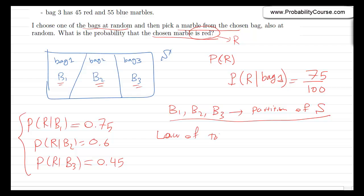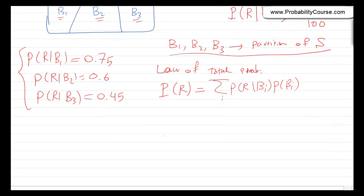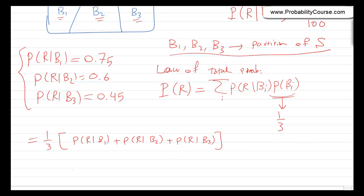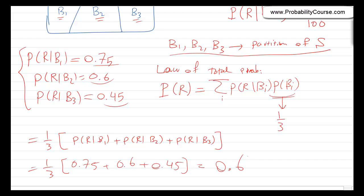By the law of total probability, the probability that I choose a red marble equals the summation over i of probability of R given Bi times probability of Bi. Now, probability of Bi is equal to one-third for each of the bags since I choose one of them uniformly at random. So this becomes 1 over 3 times probability of R given B1, plus probability of R given B2, plus probability of R given B3. This equals 1 over 3 times 0.75 plus 0.6 plus 0.45. So the answer is 0.6.